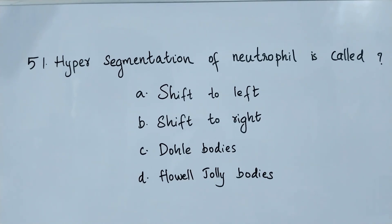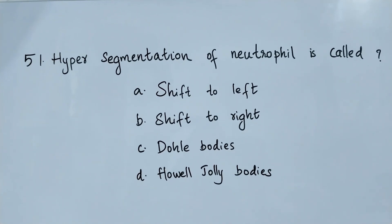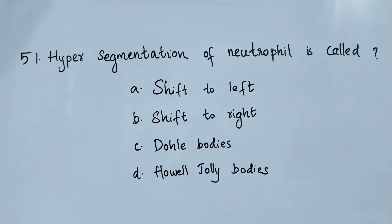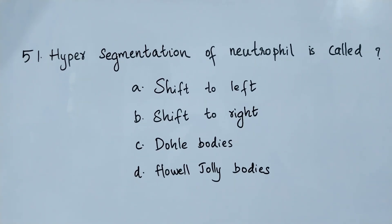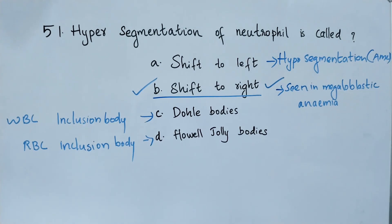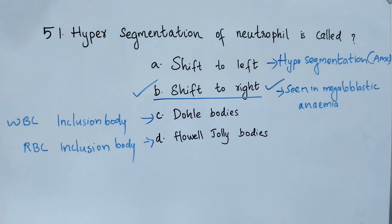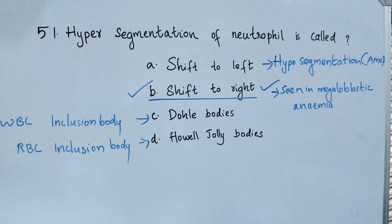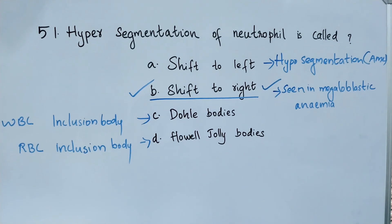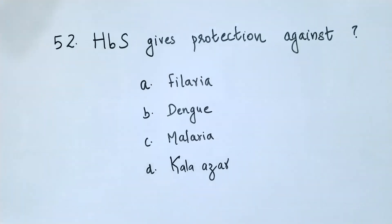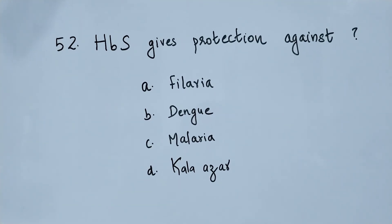Question number 51. Hypersegmentation of neutrophil is called: option A shift to left, option B shift to right, option C Döhle bodies, option D Howell-Jolly bodies. The right answer is option B, shift to right. Here, shift to left is hyposegmentation of neutrophil which can be seen in AML. Döhle bodies are a WBC inclusion body and Howell-Jolly bodies are an RBC inclusion body.